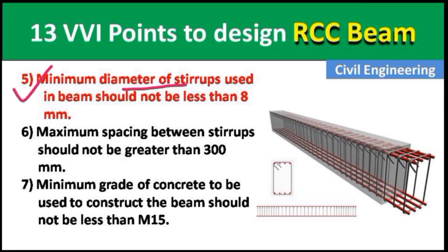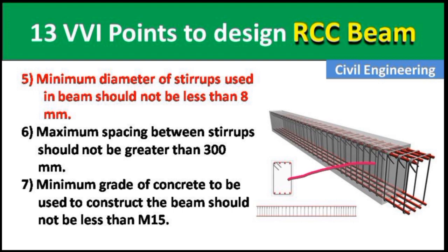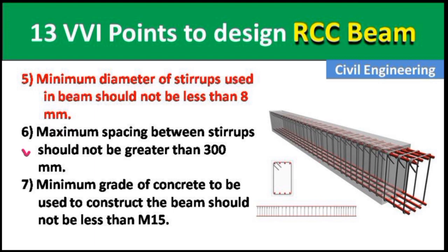Point 5: The minimum diameter of the stirrups used in the beam should not be less than 8 mm. The main rods run longitudinally, and the stirrups — which you can see in this picture wrapping around them — must have a diameter of at least 8 mm.